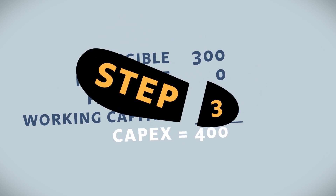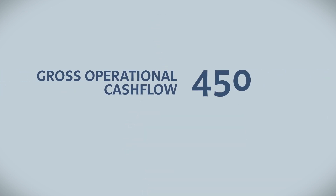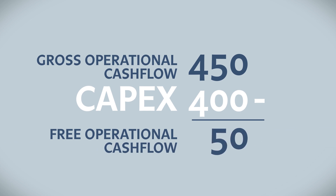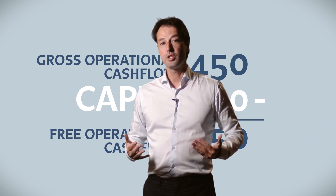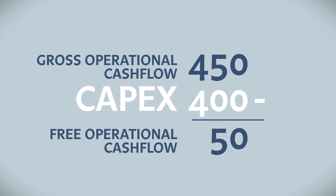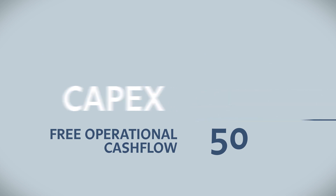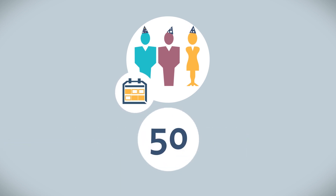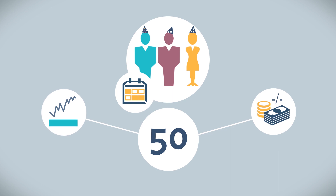Step number three — let's have a look at how it all comes together. In order to calculate the free operating cash flow, we take the gross operating cash flow of 450 and deduct the 400 of CAPEX, leaving us with a net operating cash flow of 50. This means that the gross cash flow of 450 is strong enough to carry the CAPEX of 400, and that there is 50 of cash left. The 50 can be given back to investors on the right-hand side, or we can use it and put it as savings on our bank account on the left-hand side.